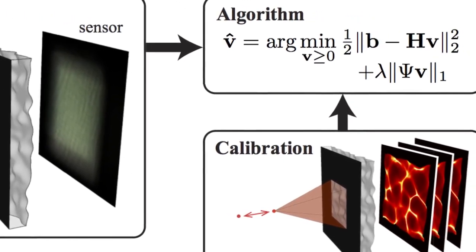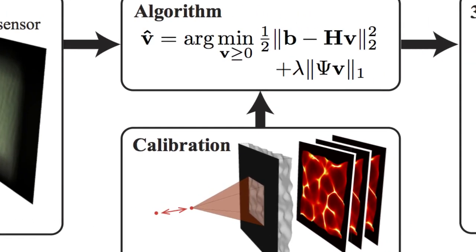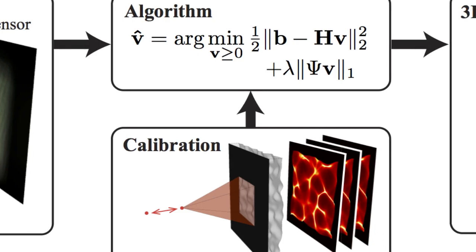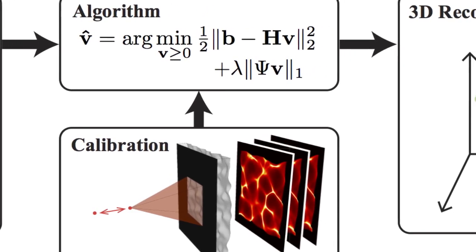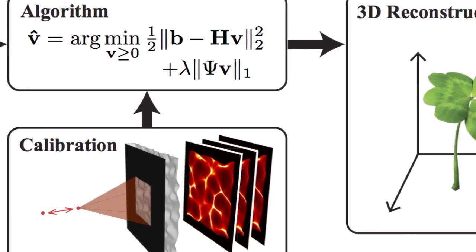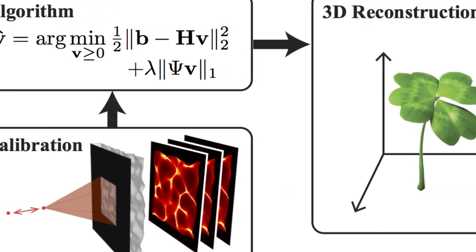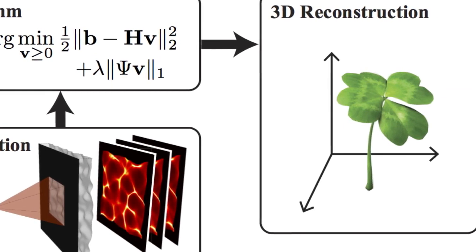The DiffuserCam can, in a single shot, capture 3D information in a large volume with high resolution. This camera could be useful for self-driving cars, where the 3D information can offer a sense of scale, or it could be useful with machine learning algorithms to perform face detection, track people, or automatically classify objects.